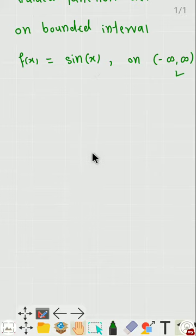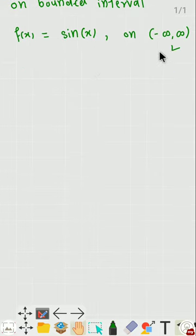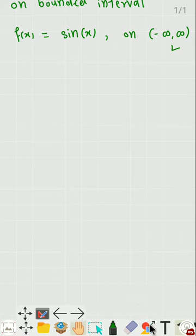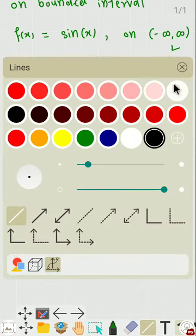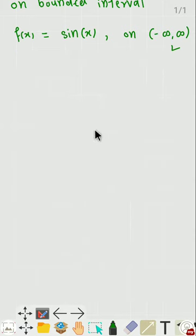It is defined on the unbounded interval (-∞, ∞), meaning it is defined for all real numbers, and that function is a bounded function. We know the graph of the sine function, so let us try to draw the graph of the sine function.